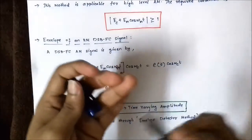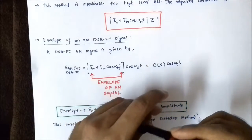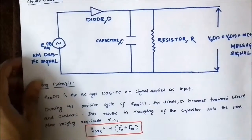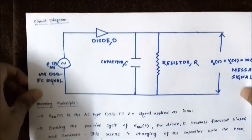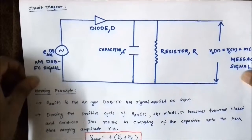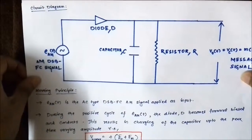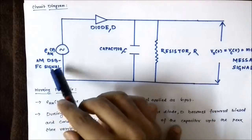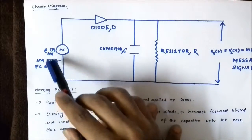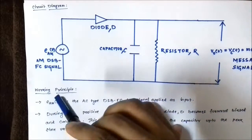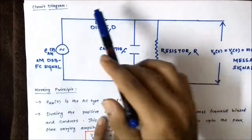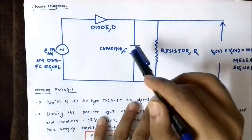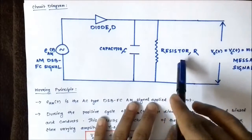Let us understand how this is done. This is the circuit diagram of the envelope detector method for demodulation of a double sideband full carrier signal. Here we have the DSBFC signal as an AC signal, since it consists of both positive and negative peaks. The circuit contains a diode, a capacitor, and a resistor.